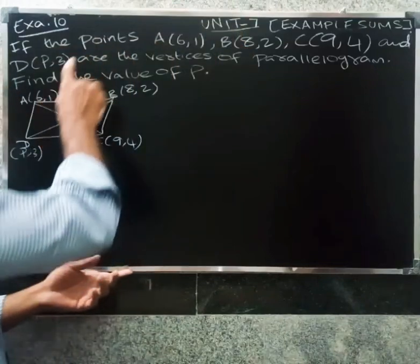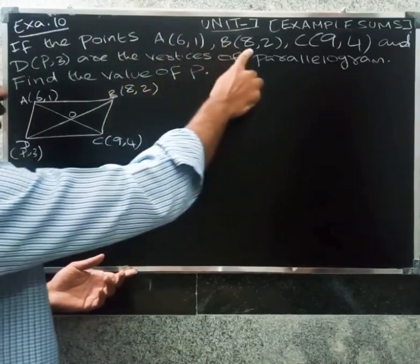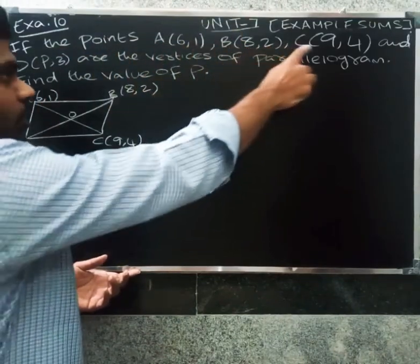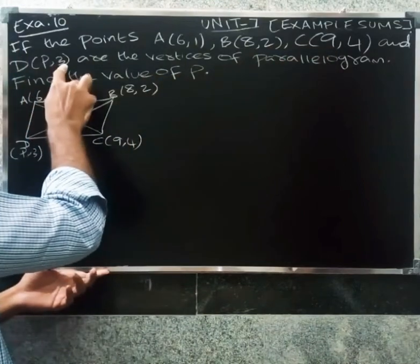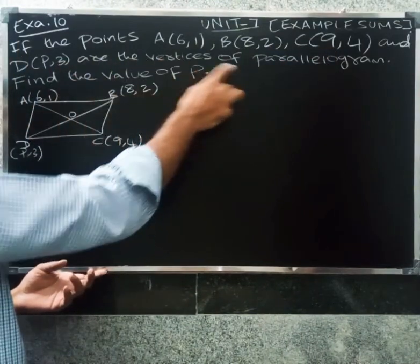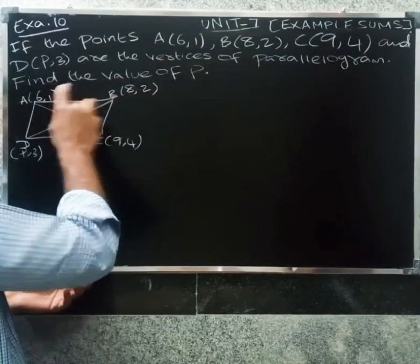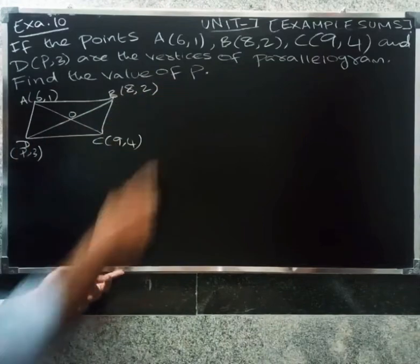Example 10. If the points A(6,1), B(8,2), C(9,4), and D(p,3) are the vertices of a parallelogram, find the value of p.